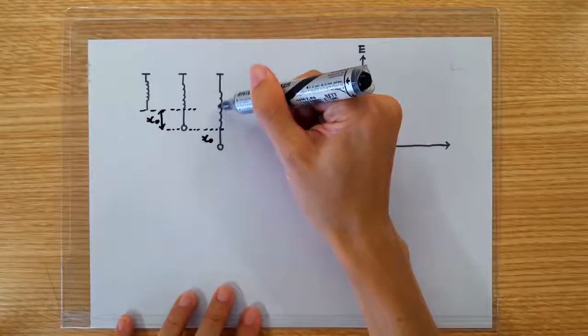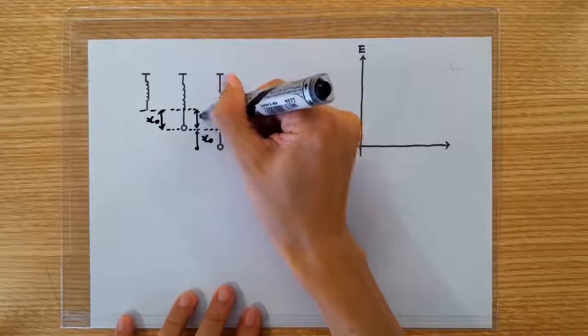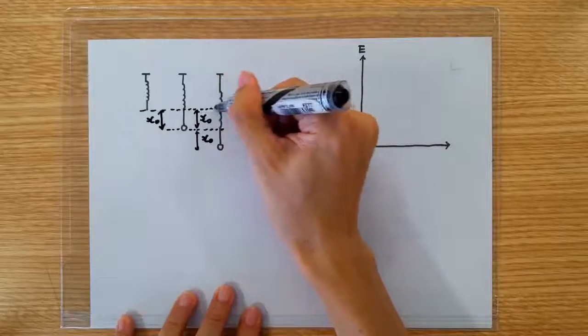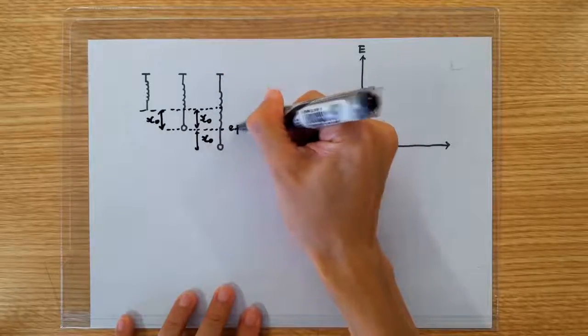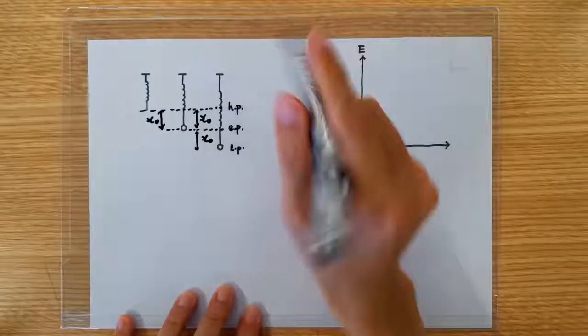Obviously, it's going to go in oscillation with an amplitude of x0. So here is the equilibrium position, this is the lowest position, and this is the highest position of the oscillation.